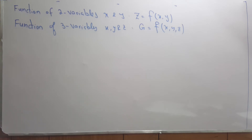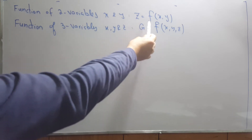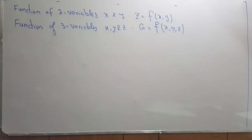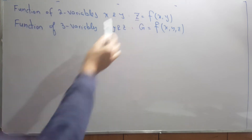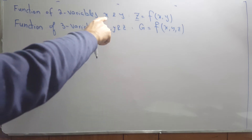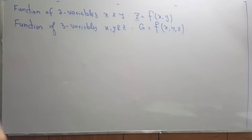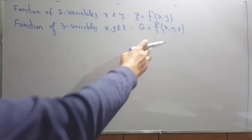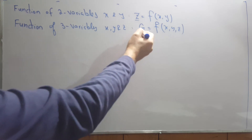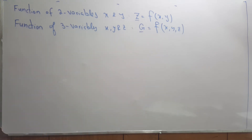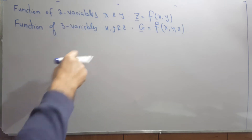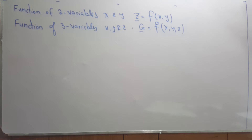Hello everyone. In this video we will discuss two-variable functions and three-variable functions. A two-variable function, called Z, is a function of two variables x and y — if we assign x and y values, it gives us a Z value, where x and y come from a set in two-space. Similarly, a three-variable function has x, y, and z assigned to give a unique value, and x, y, z are from a set in three-space.